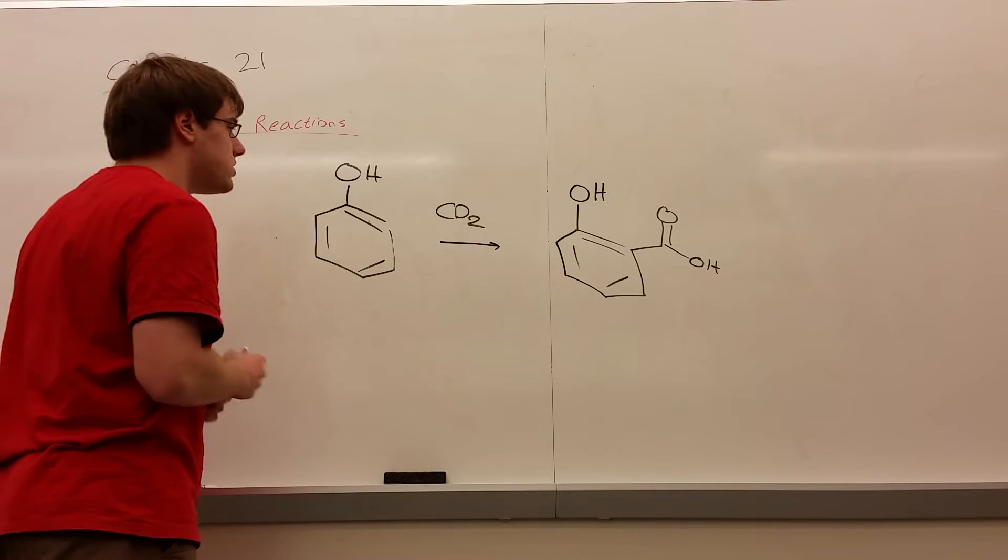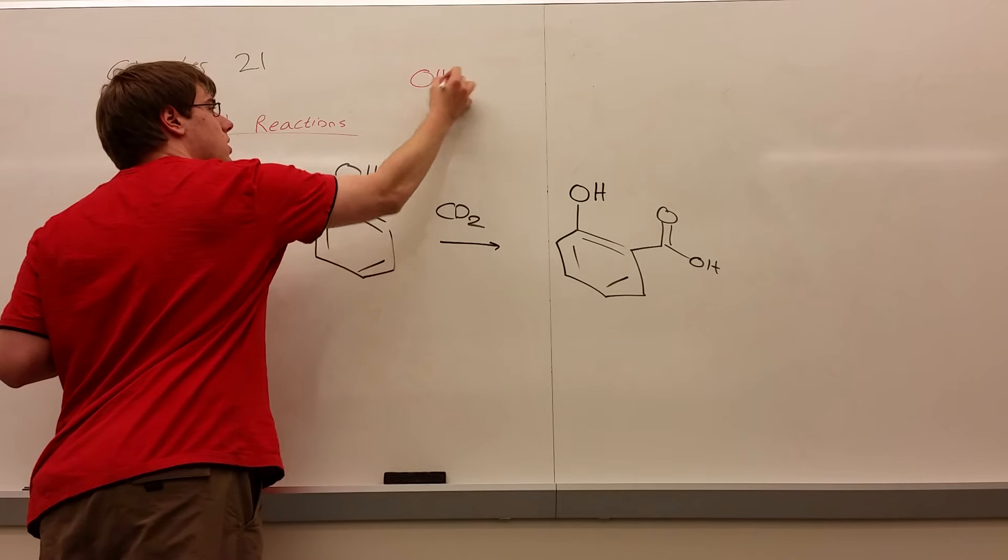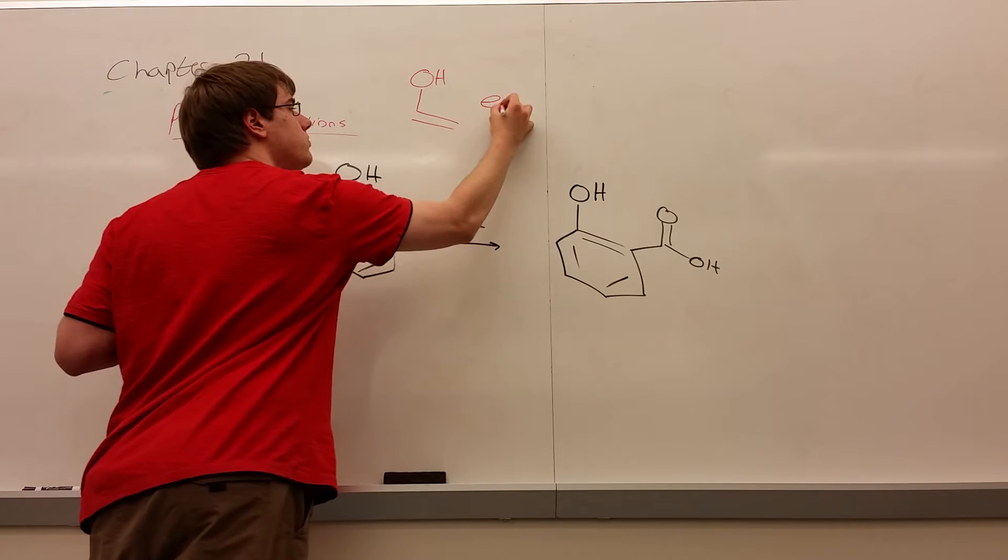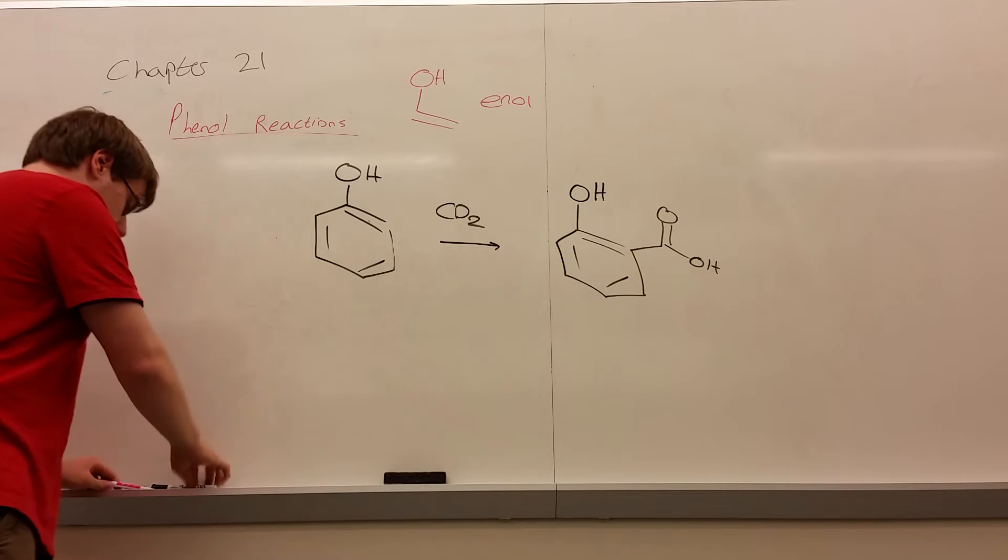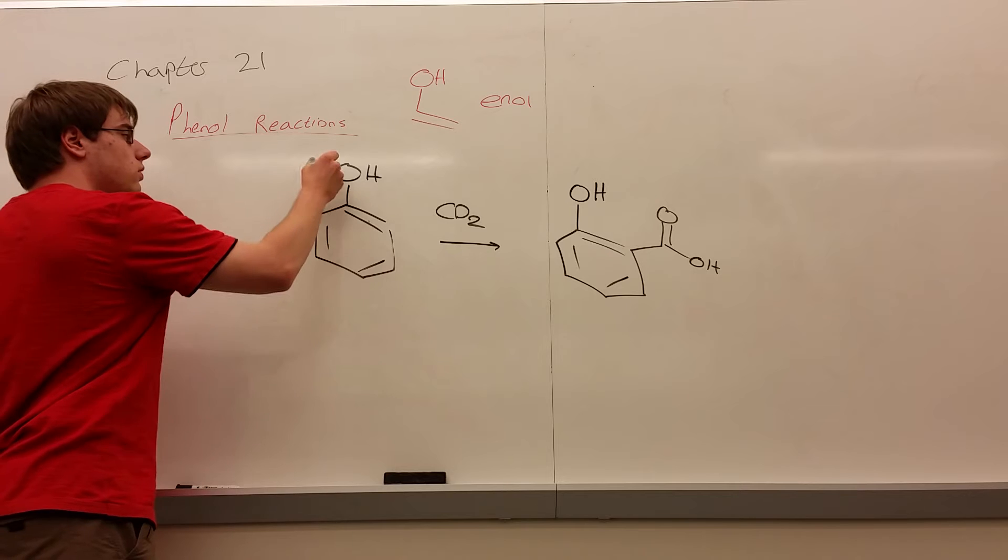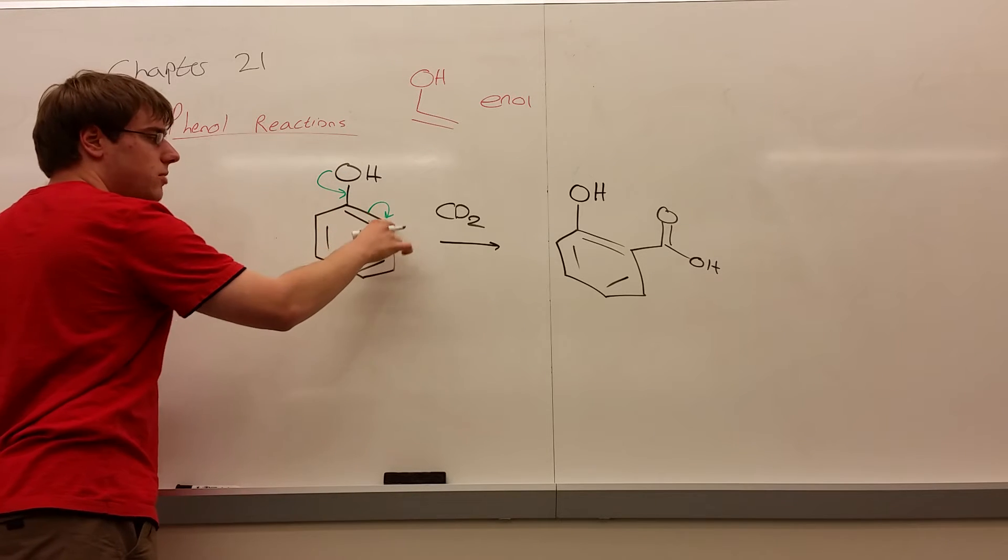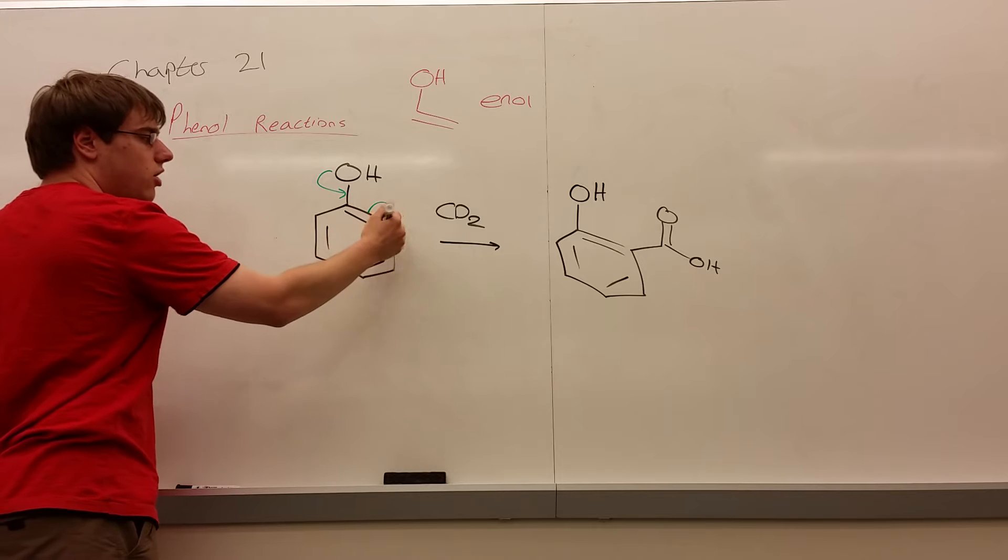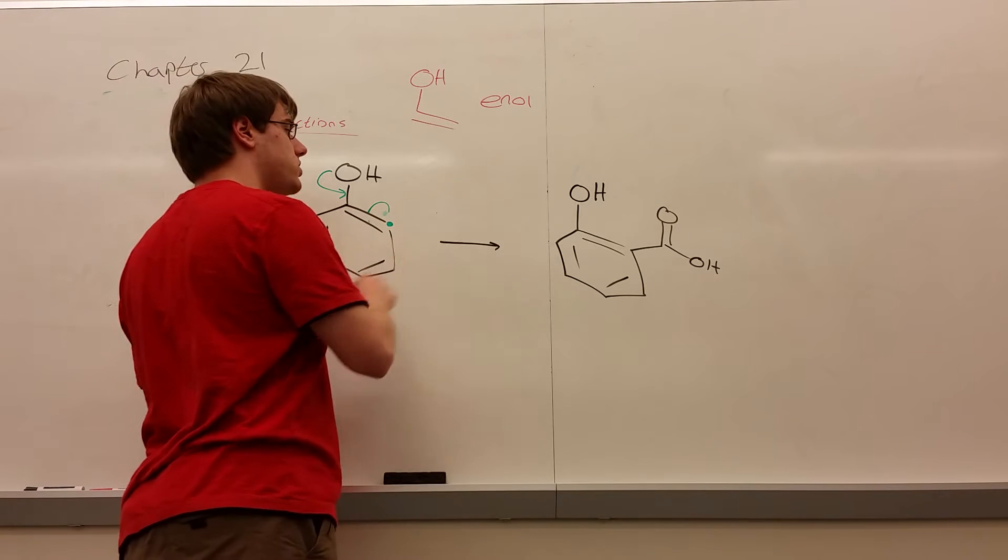Well, remember what phenol is. At its core, it's an OH on a carbon-carbon double bond, an enol, right? And we know how enols like to react. The electrons of the oxygen will look to swing down, and then this double bond would be pushing electrons onto there, making that carbon negative, so that carbon is going to go out and make a bond to something.